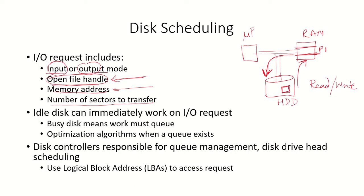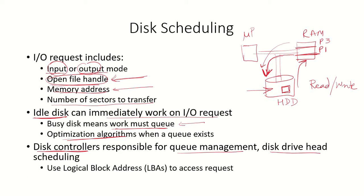If a request arrives and the disk is idle, it will immediately begin handling that I/O request. But if the disk is busy, the incoming request must join a queue. Multiple processes — for example P1 and P3 — may each send requests, all forming a queue. When a queue has formed, an optimization algorithm can be applied. The disk controllers, which are electronic devices within hard disk drives, are responsible for managing this queue and scheduling the disk drive head.